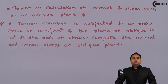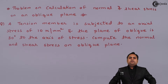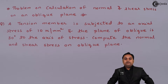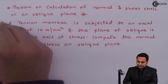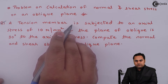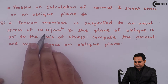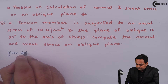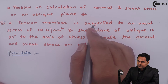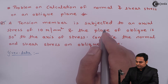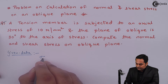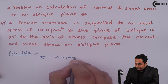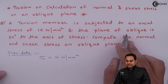In this video we will see a problem on calculation of normal and tangential stresses on an oblique plane. A tension member is subjected to an axial stress of 10 Newton per mm square. I'll write it in the data — it is a tension member and the stress is given as Sigma X, assuming it to be in the X direction: 10 Newton per mm square.